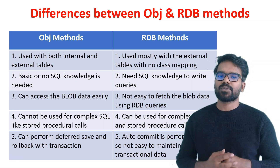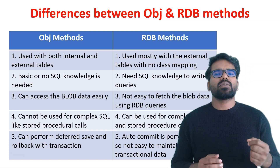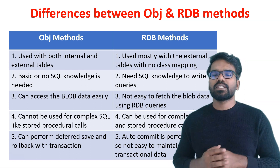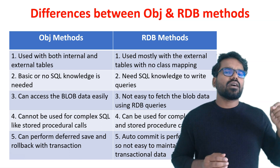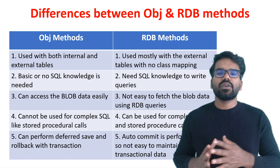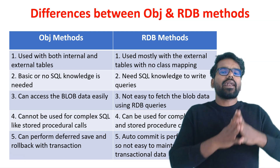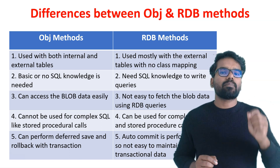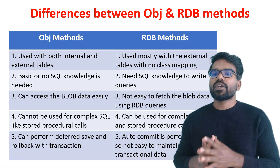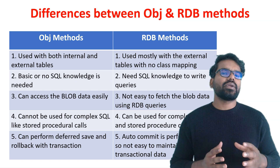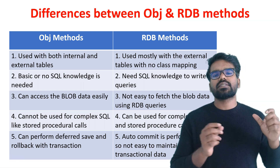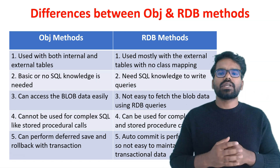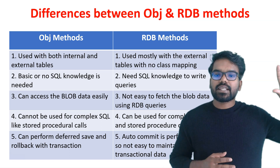Now let's come to the fourth point. If you want to write some complex queries which you cannot achieve using OBJ method, or if you want to call or execute a stored procedure, then you can go for RDB methods. All other times, just always use OBJ method, and that is what Pega recommends. In the coming 4-5 videos, we are going to extensively look at the differences between different OBJ and RDB methods and how we can use them in an activity rule. See you in the next video.